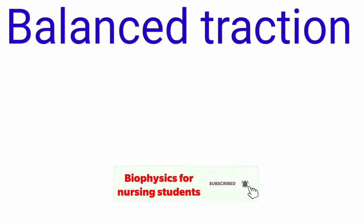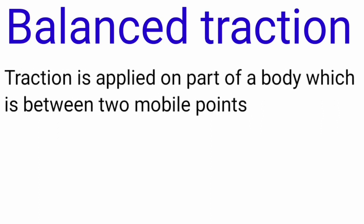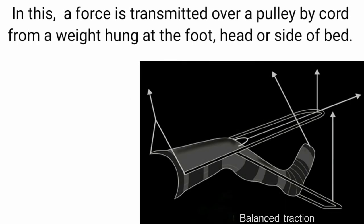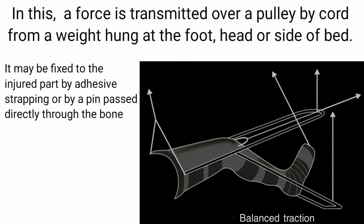Coming to balanced traction: in balanced traction, a pulling force is applied on a part of the body which is between two mobile points. A force is transmitted over a pulley by a cord from a weight hung at the foot, head, or side of the bed. This balanced traction may be fixed to the injured part by adhesive strapping or by a pin passed directly through the bone.